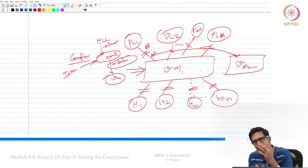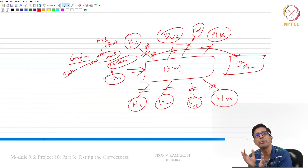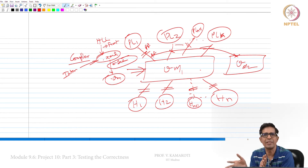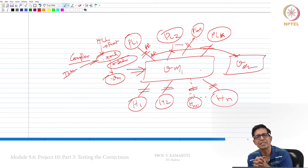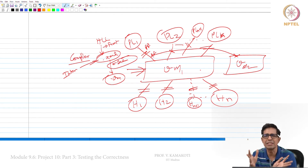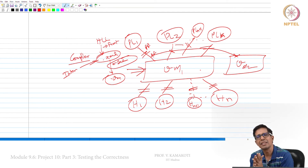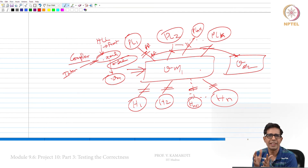If you finish this part, you will have covered what many university compiler curricula cover — up to intermediate code generation — and you will have done it within two weeks. There is a lot more to learn in compilers, but this is a very good starting point. We will now start looking at code generation in the next module. Thank you.